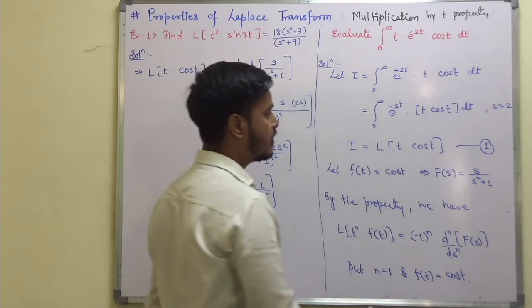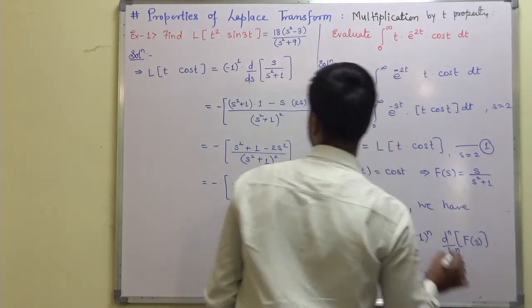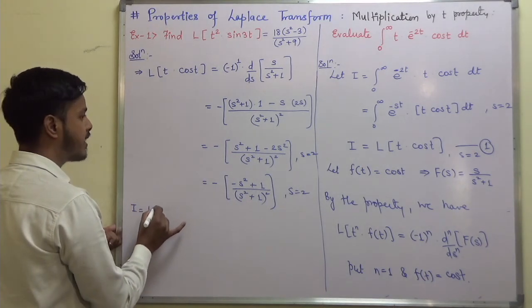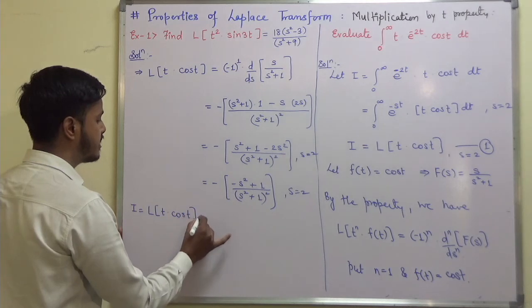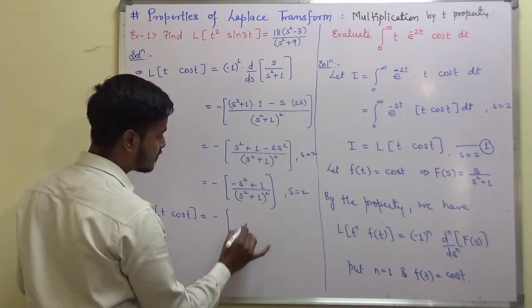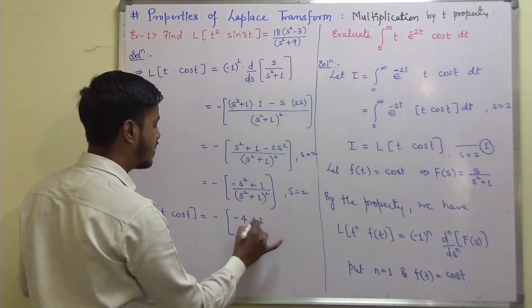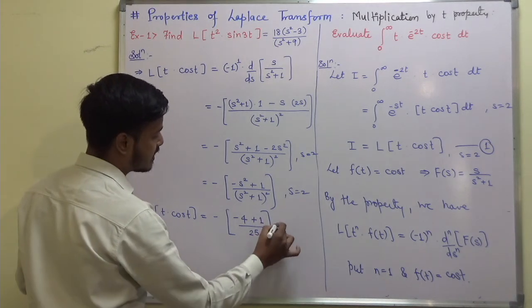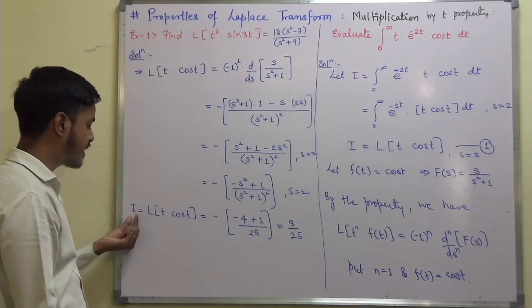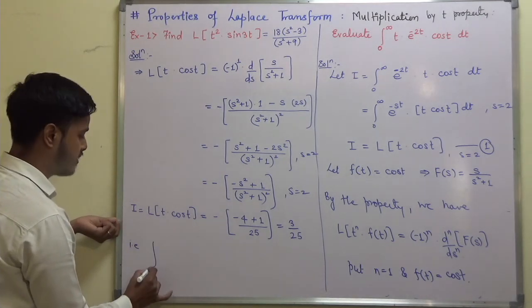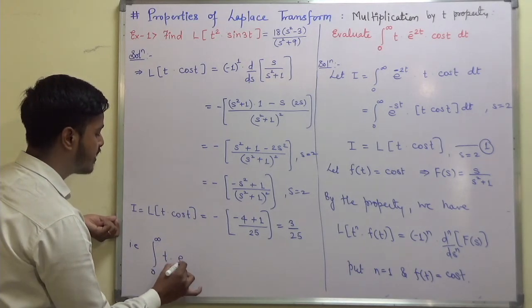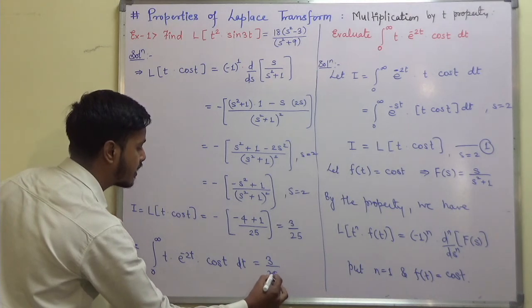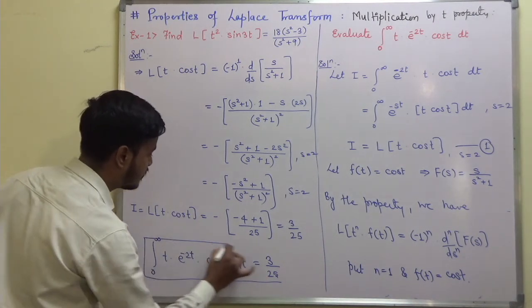Since everything is evaluated at s = 2: I equals the Laplace transform of t cos(t) at s = 2, which gives minus(1 minus 4) upon (4+1) squared. That is minus(minus 3) upon 25, giving 3 upon 25. So the integral from 0 to infinity of t e to the power minus 2t cos(t) dt equals 3/25.